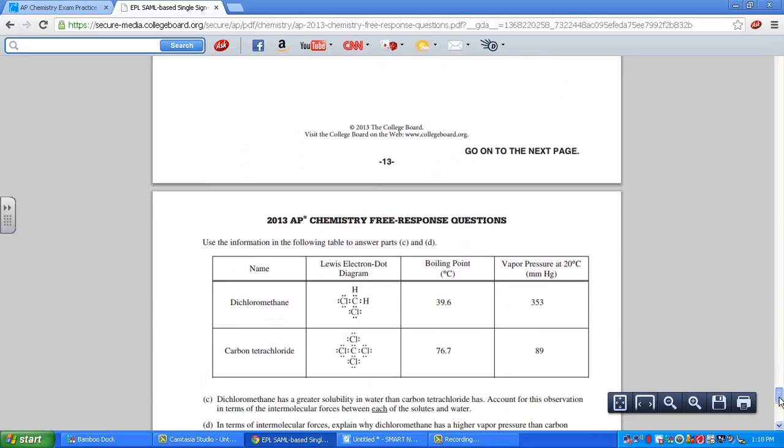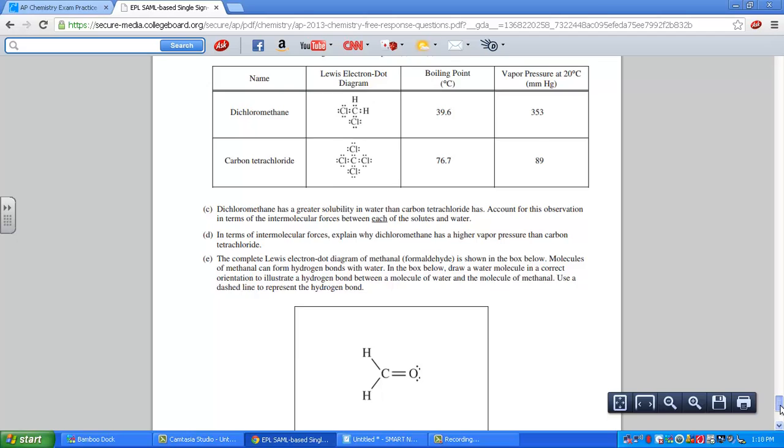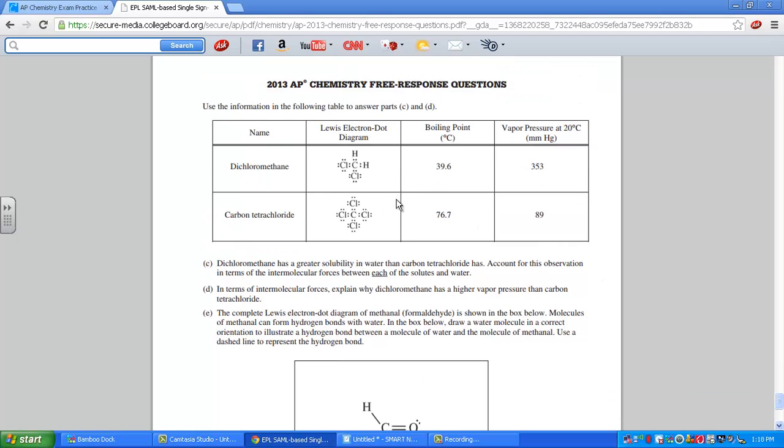Let's see what's next. Next page here. This time we're looking at two structures. We have a carbon in the center, 2 H's, 2 Cl's, dichloromethane, compound 1. Boiling point low at 39.6, and vapor pressure high at 353, so weak intermolecular attractions. Carbon tetrachloride, here this is a complete non-polar molecule. Higher boiling point, 76.7, lower vapor pressure, 89.